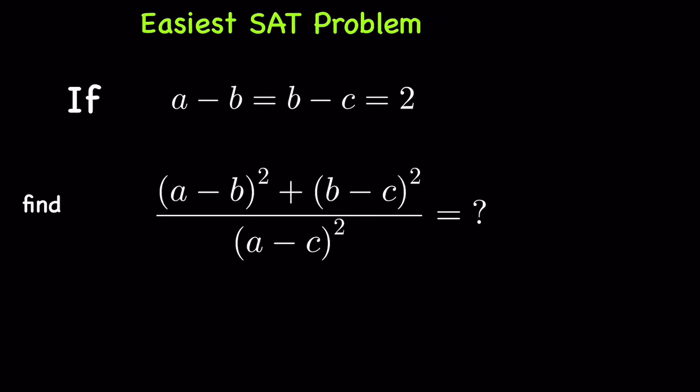Can you solve this easiest SAT problem? If A minus B is equal to B minus C is equal to 2, find A minus B whole square plus B minus C whole square upon A minus C whole square.